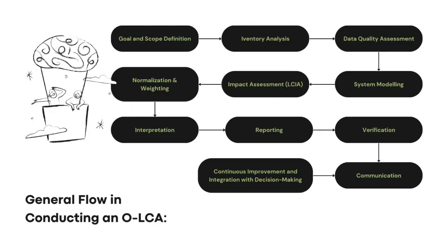Conducting an organizational life cycle assessment involves a series of systematic steps to assess and quantify the environmental impacts associated with an organization's activities across its entire life cycle. By following these steps, organizations can conduct a comprehensive OLCA that provides valuable insights into their environmental performance and supports informed decision making for sustainable practices and continuous improvement. The specific details of each step may vary based on the organization's context, the nature of its activities, and the available data.